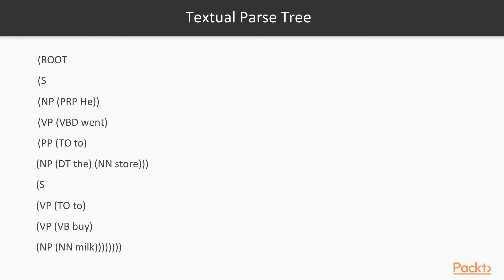In the textual parse tree, notice we have a root for that particular sentence. We have 'S', which represents sentence structure. We see many of the part-of-speech tags learned earlier — the word 'he,' which can be a pronoun, the verb 'went,' another preposition 'to,' and the other elements displayed in textual fashion. The use of parentheses and indentation conveys how the sentence is structured, giving us more information about what meaning this sentence is trying to convey.